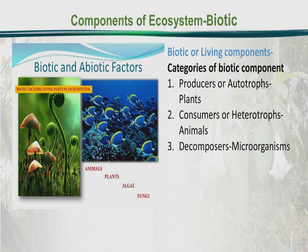Then there are the decomposers — small microorganisms. Without these, the ecosystem cannot function, because the elements found in compact form in plants and animals need to be released and recycled into nature. This recycling through the abiotic component is in fact the function of these decomposers and microorganisms.